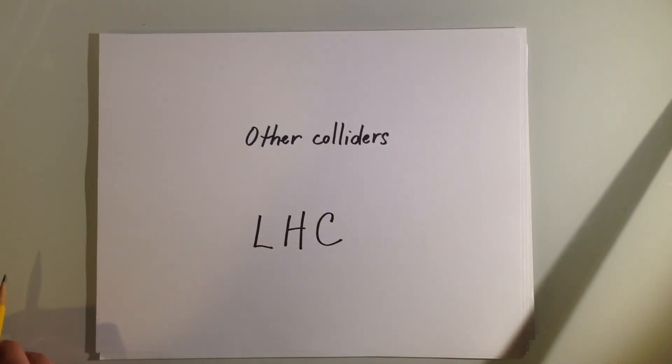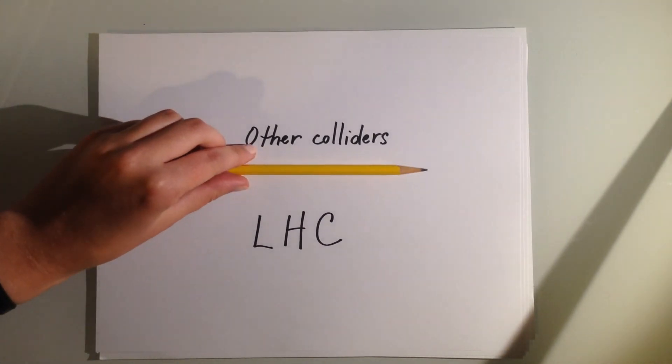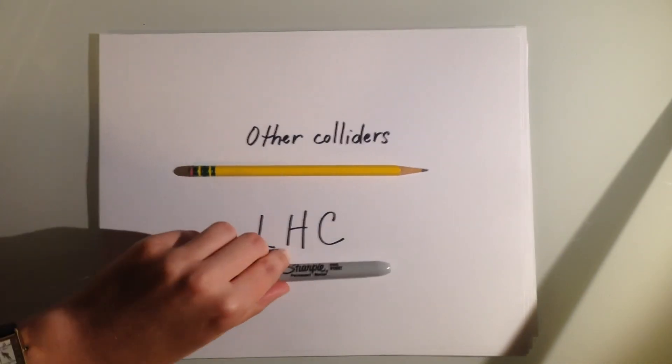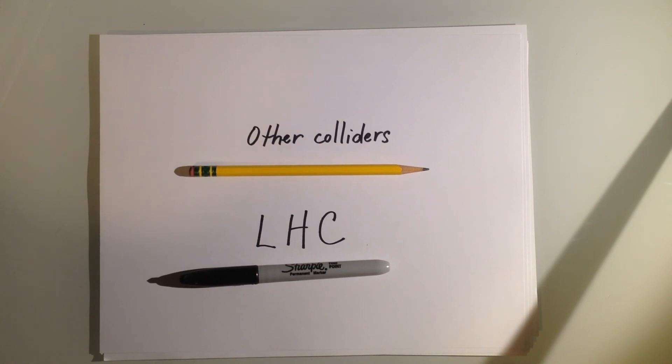That's why the Large Hadron Collider at CERN is so important. It's the biggest particle smasher that we've ever built. It also happens to be the largest machine humankind has ever built, so that's pretty cool. Other colliders are like a pencil where the LHC is like a sharpie. We think that it is strong enough for us to see evidence of supersymmetry.